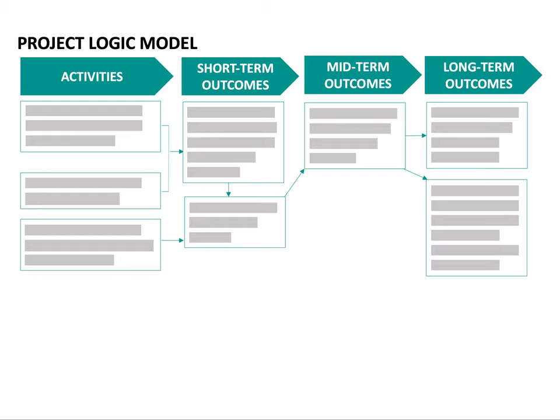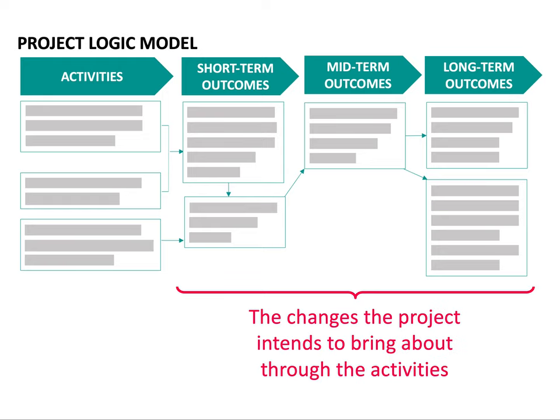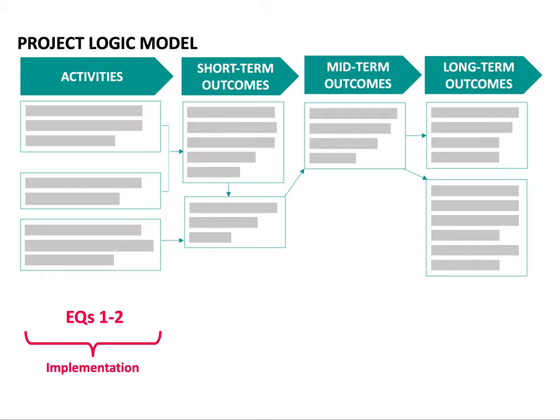Let's take a quick look at a general project logic model. The details in each box have been grayed out so we can focus on how a logic model can help frame your evaluation questions. As you can see across the top, this logic model identifies the project's activities — what a project does, creates, or delivers — as well as the short-term, mid-term, and long-term outcomes, which are the changes the project intends to bring about. Evaluation questions about activities could help a project determine whether they are achieving their targets in terms of measures such as student numbers, diversity, or satisfaction. It's also important to ask questions about the project's strengths and weaknesses to make sure the evaluation is gathering information that can be used to enhance its quality.